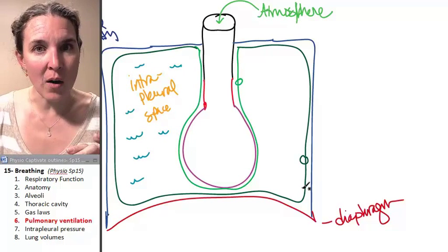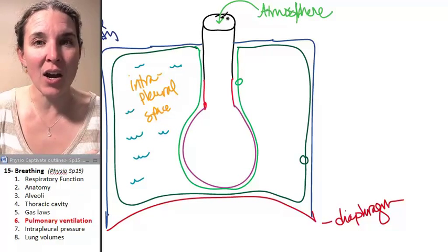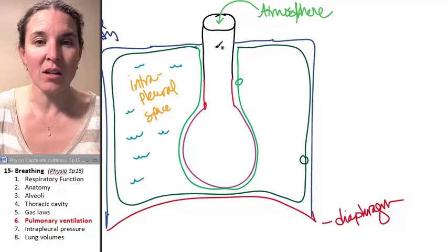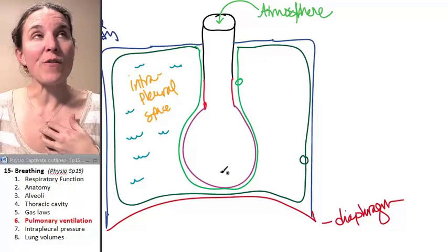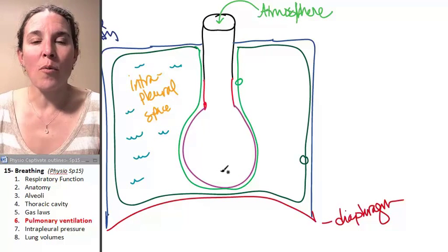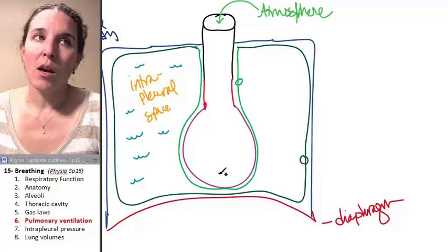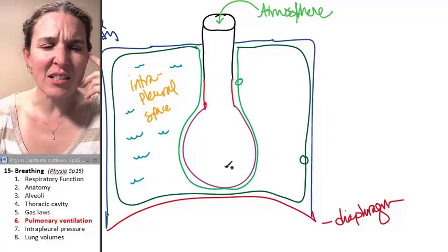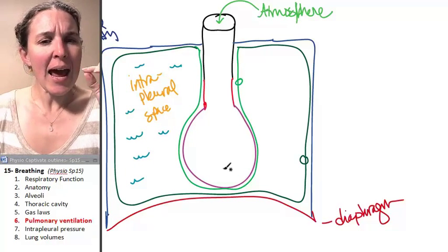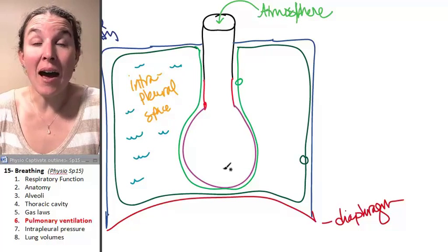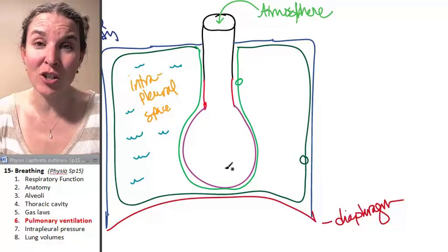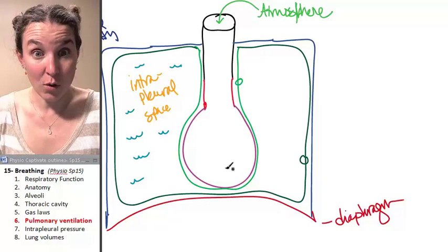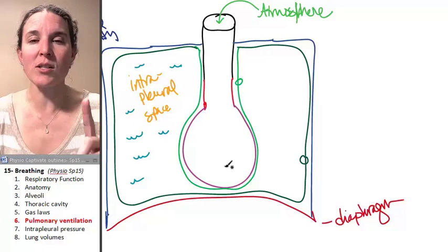But we're going to talk about how can we get air from the atmosphere into the alveoli. And if you're thinking about old Boyle's law, you should be thinking that we have to somehow be changing volumes in order to change pressures.